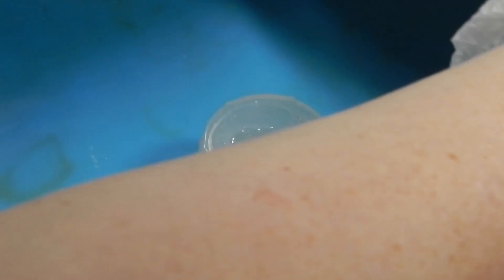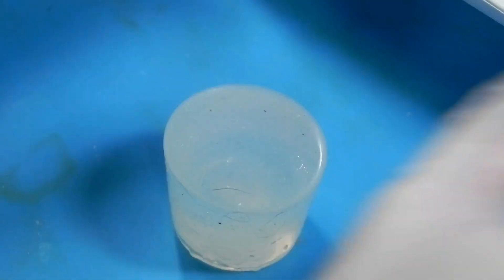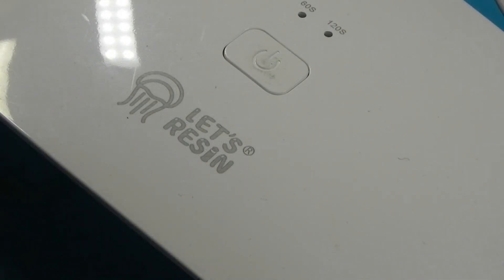Once it's done, flip the mold over and give it another 120 seconds. This just makes sure that the whole thing is cured all the way through. It's another benefit for doing really clear silicone.